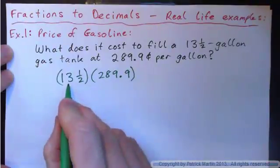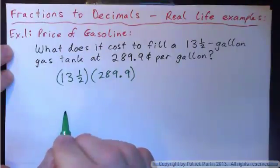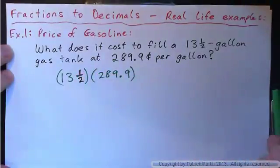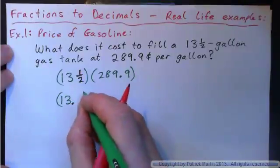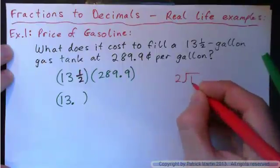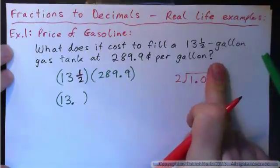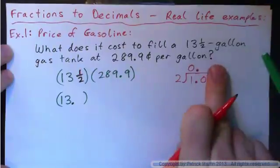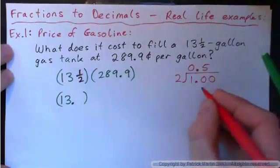It might be a good idea to just turn that into a decimal. If I turn the half into a decimal, what do I get? Can you remember what it is? One half is zero point — if you don't remember, all you've got to do is go two into one. Write that one point zero zero. Two into one won't go. Put the decimal point up here. Two into ten goes five times. So one half is zero point five.